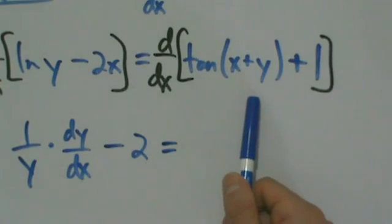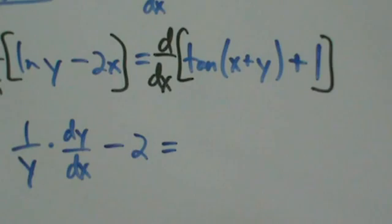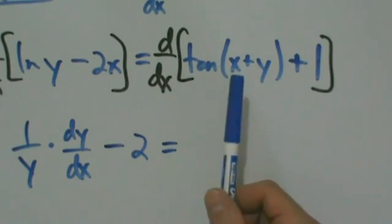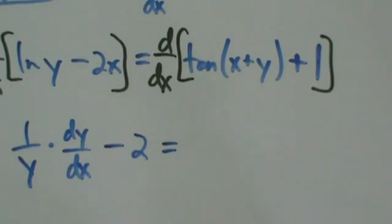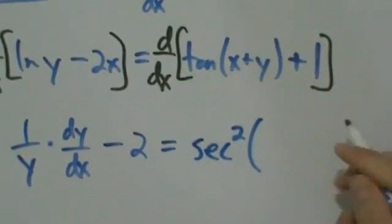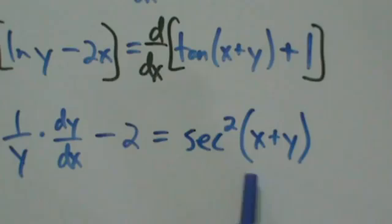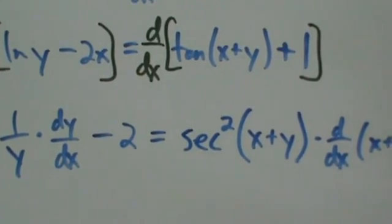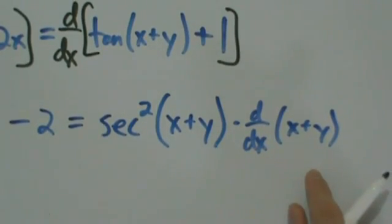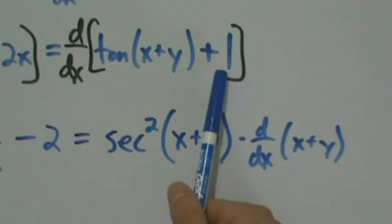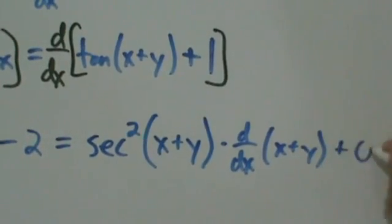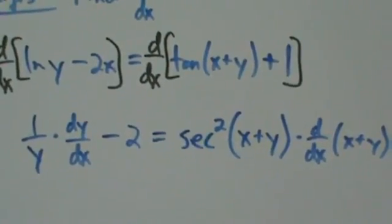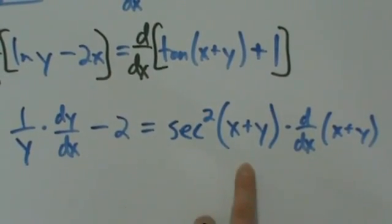On the right side, we have tangent of x plus y. This is a chain rule thing again. The big guy on the outside is tangent, because that's happening to both the x and the y. So the derivative of the big guy is secant squared, evaluated at the little guy. The little guy is x plus y, and now we multiply by the derivative of the little guy, which is d/dx of x plus y. We also have the plus 1, but 1 is a constant so its derivative is 0.